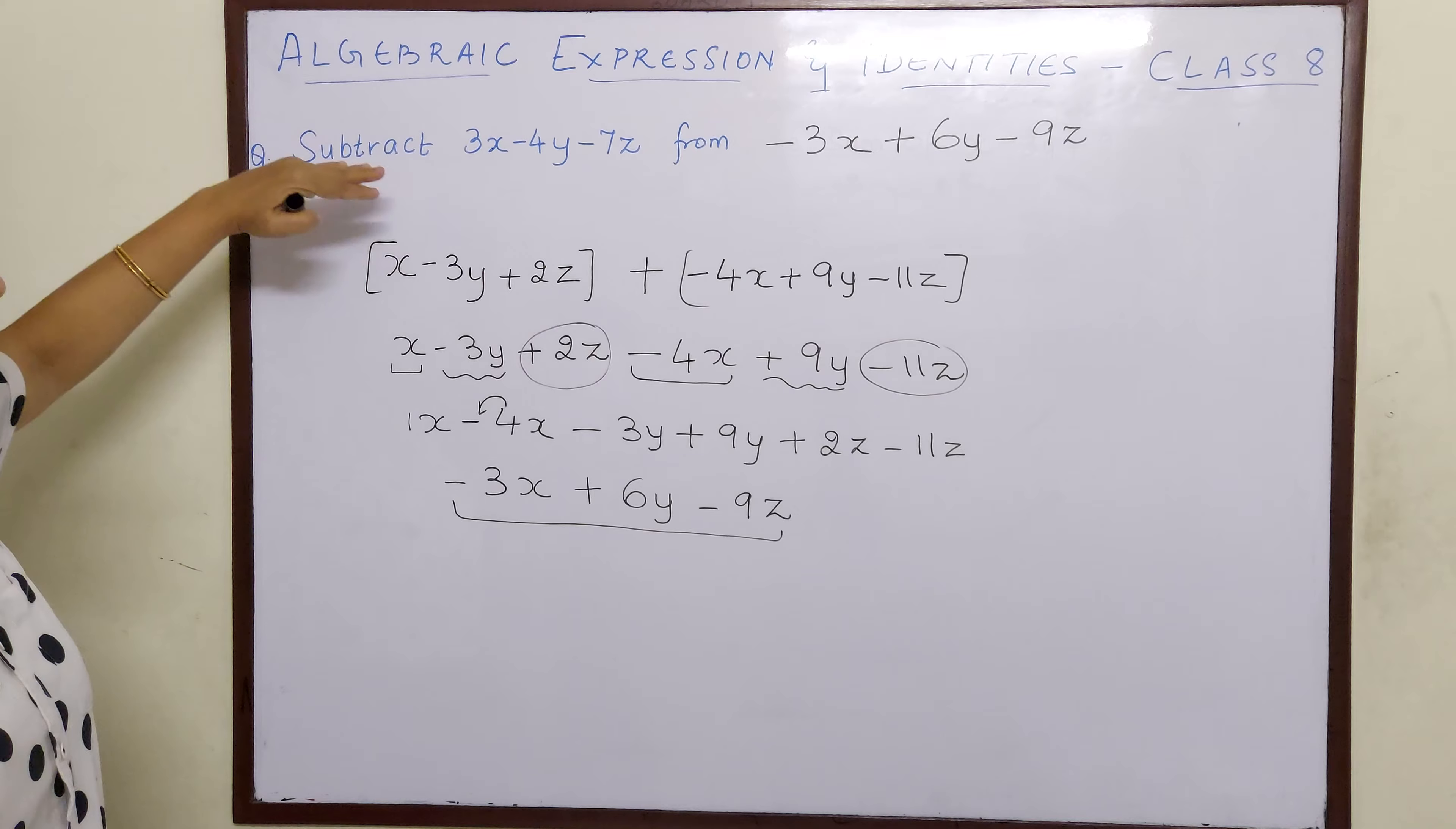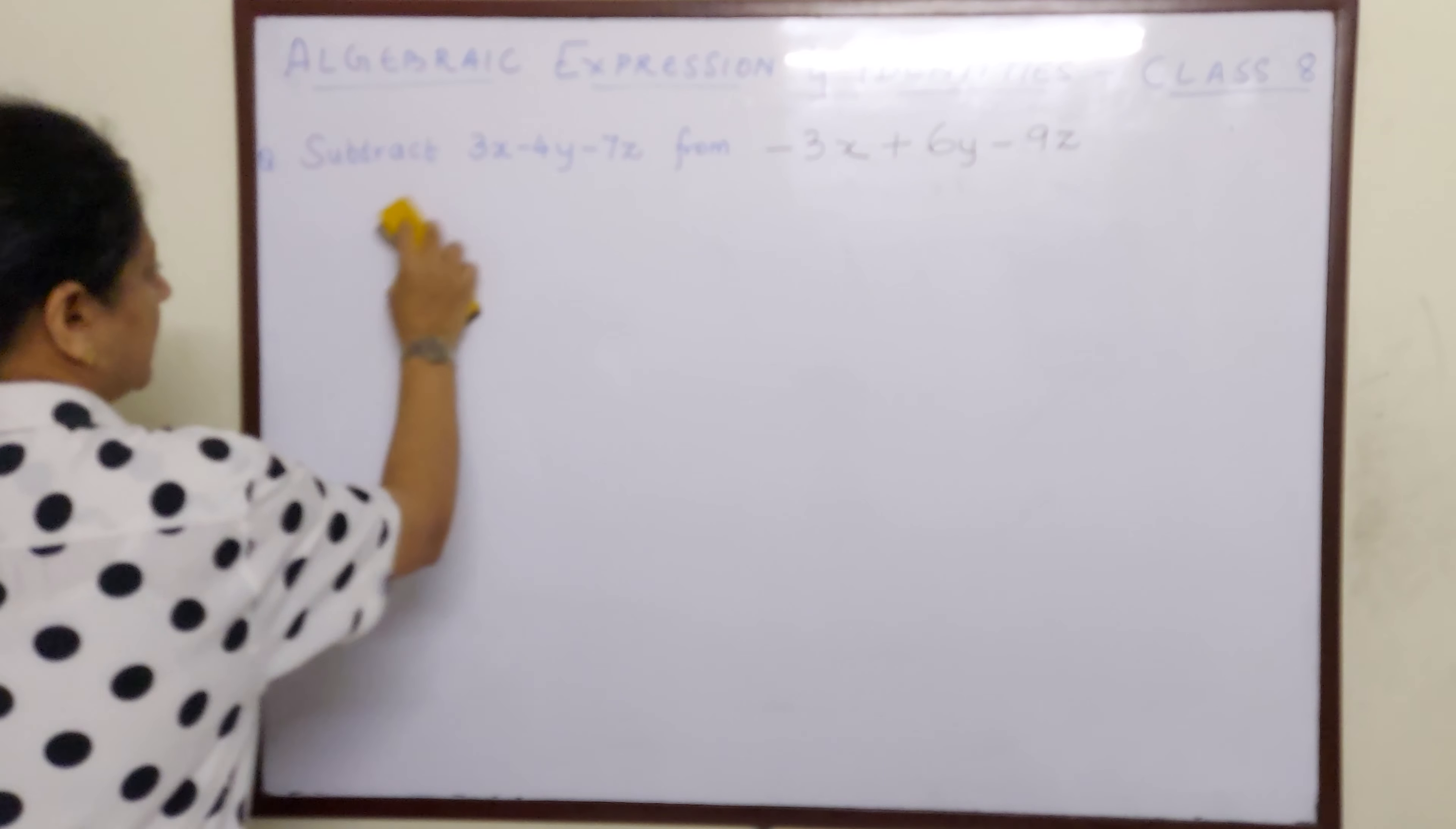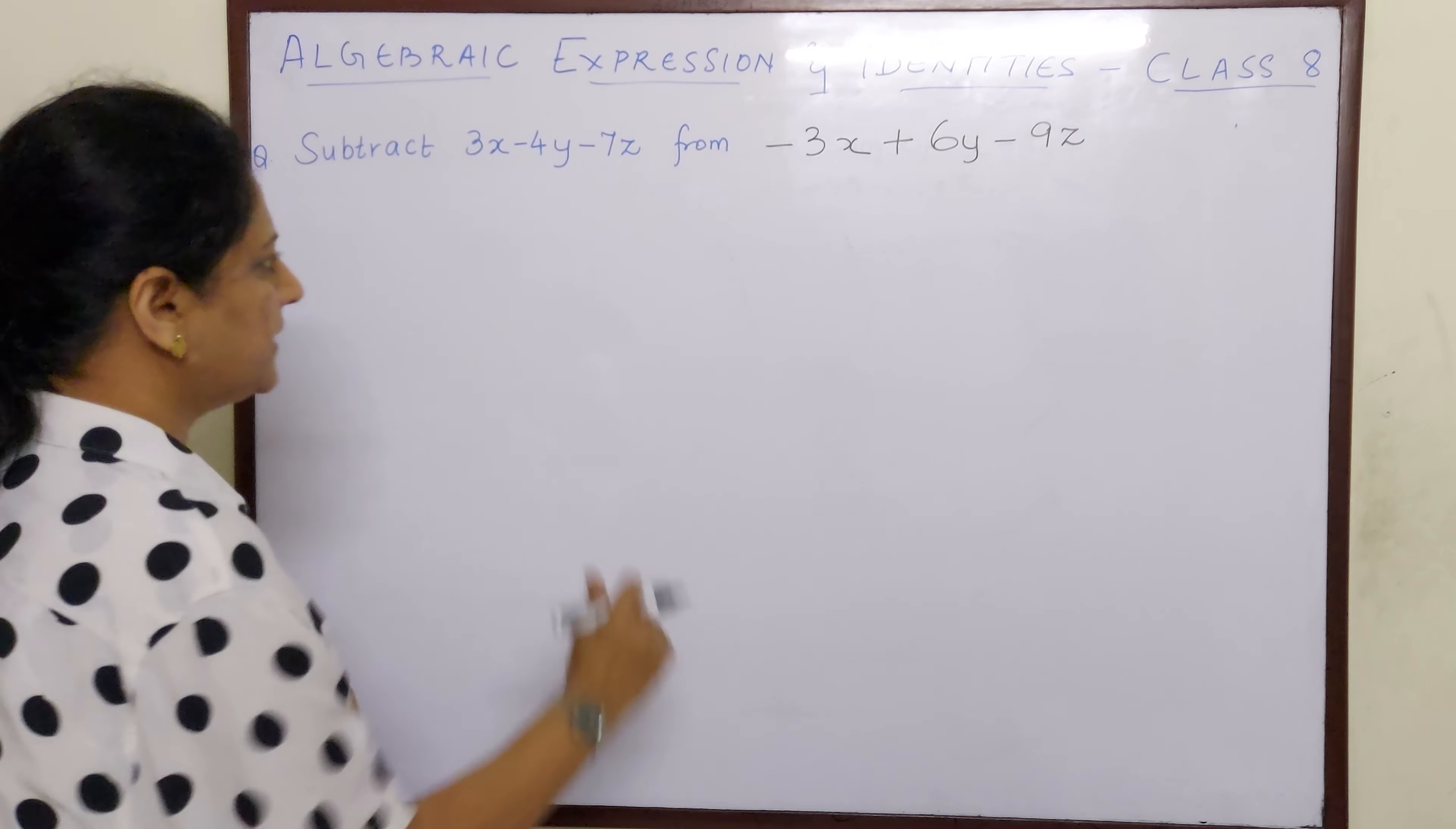So now the question says subtract this algebraic expression from this. Whatever number comes after 'from', that only we will write first. That is the rule of subtraction. So here this number will come first. This algebraic expression has to be taken first, and this will come second.